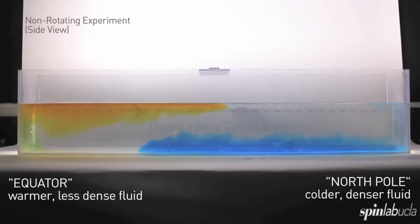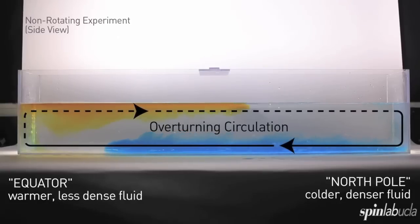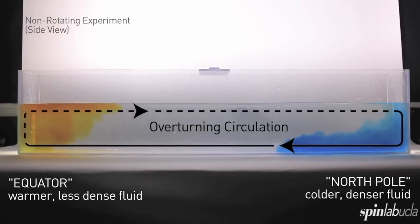In contrast, the less dense fluid at the equator floats to the top, coats the top surface, and travels from equator to pole. And this is our analogy for a large-scale overturning atmospheric circulation.